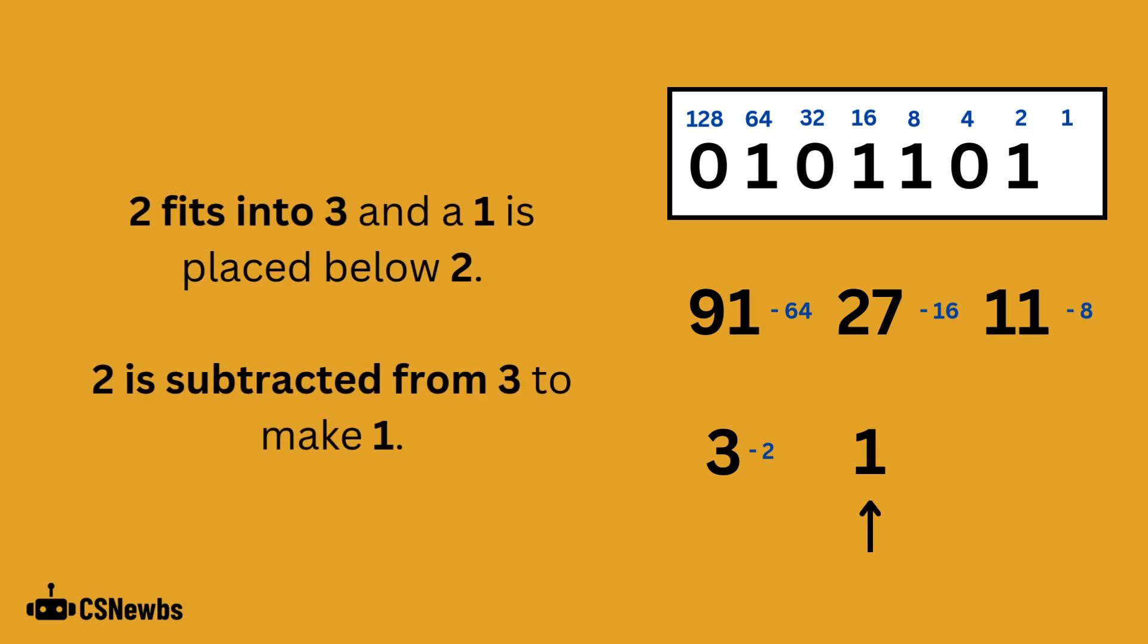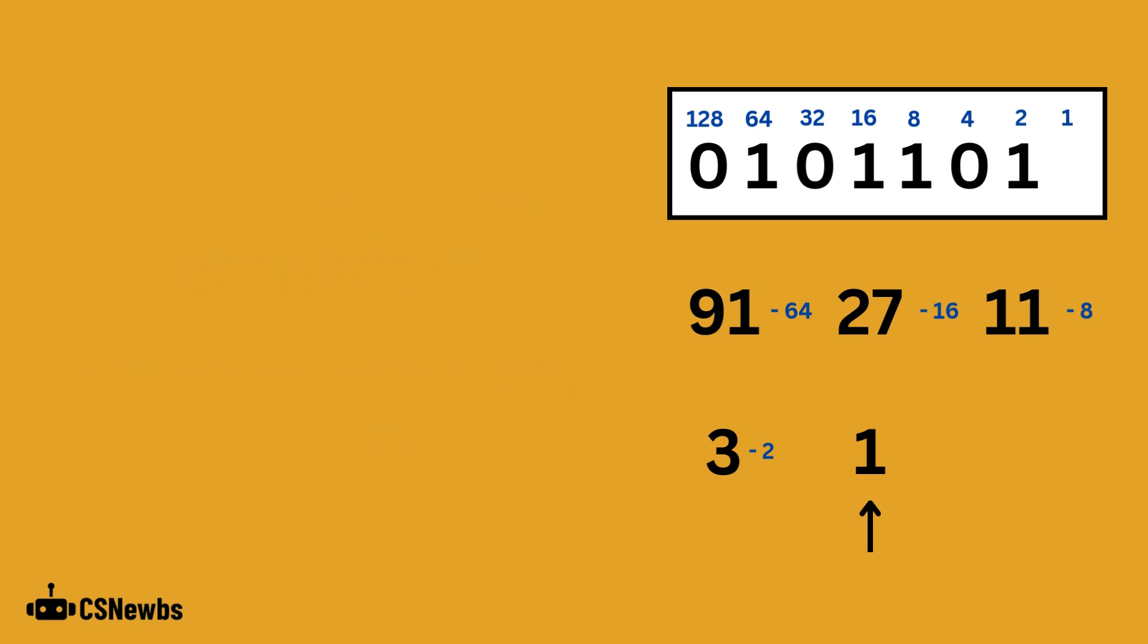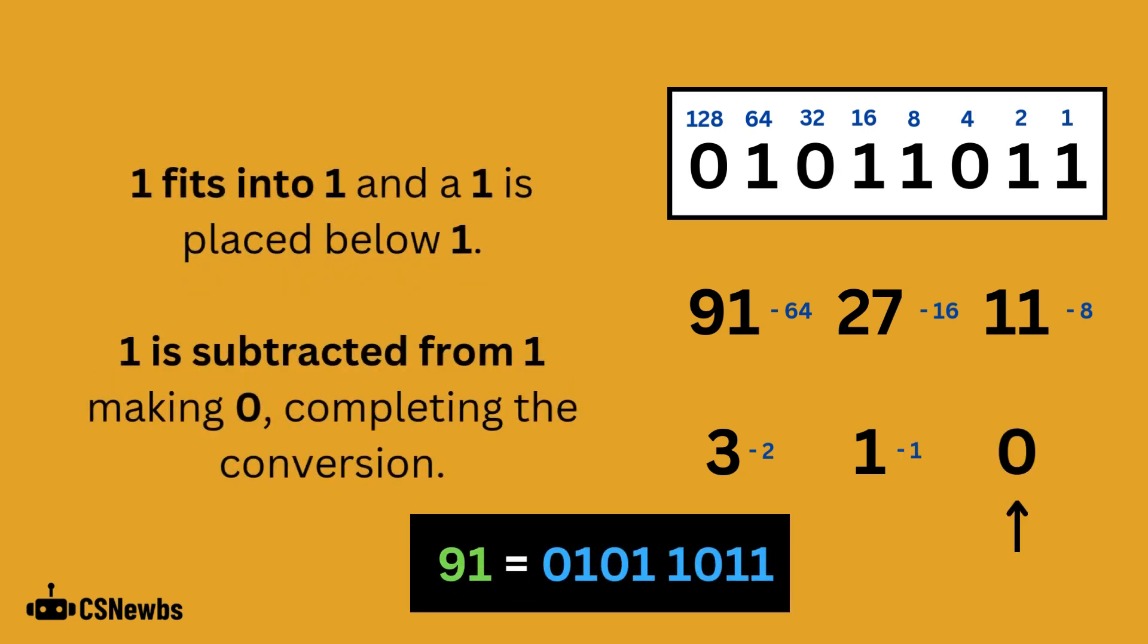2 fits into 3, and a 1 is written below the 2 place value. 2 is subtracted from 3 to make the new denary value of 1. 1 fits into 1, so we place a 1 below the 1 place value. Subtracting 1 from 1 makes 0, completing the entire conversion. So 91 is the same as 01011011.